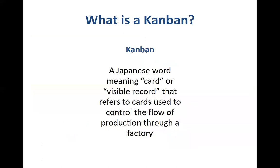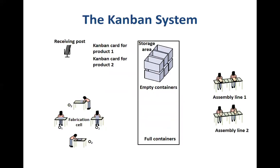Now we'll try to understand what kanbans or kanban signals are. Kanban is a Japanese word which refers to 'card' or 'visible record.' These are the cards used to control the flow of production through a factory. Unlike using sophisticated technology for coordination, these are very simple tools which help in coordinating different processes and workstations, ensuring that the flow of production matches the rate of demand.